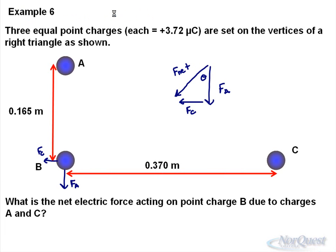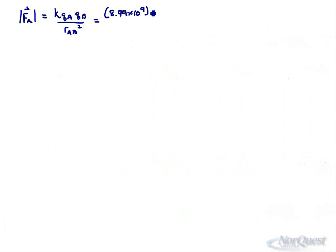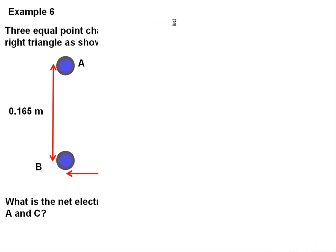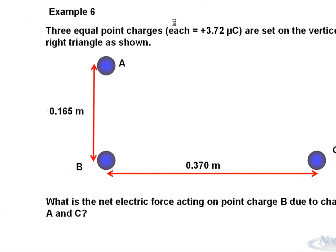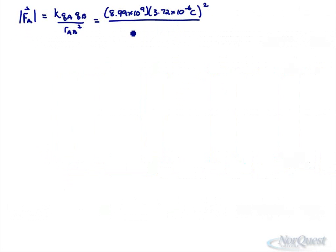3.72 microcoulombs. So I can go 3.72 times 10 to the negative 6 coulombs. I did put my units in there. Too used to it. Squared. Divide by the distance between them, which was 0.165 meters. 0.165 meters squared.